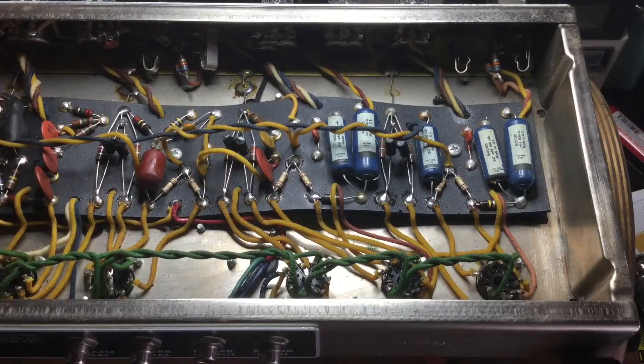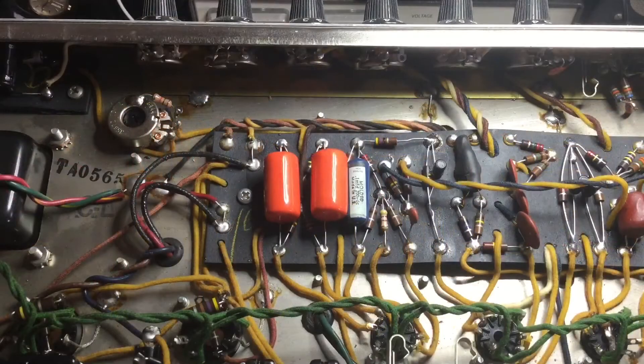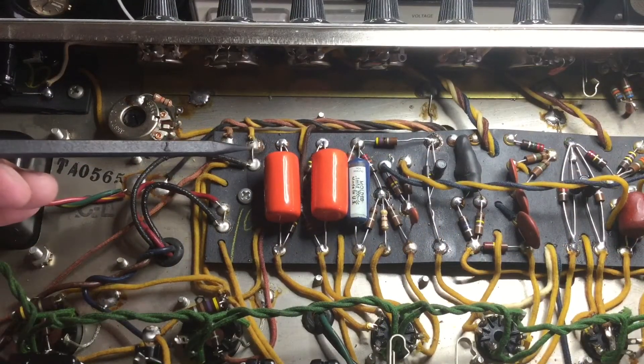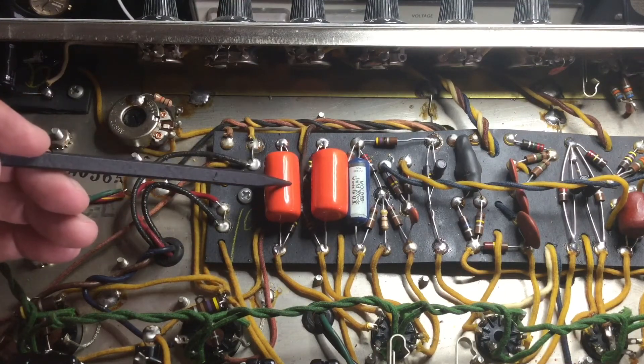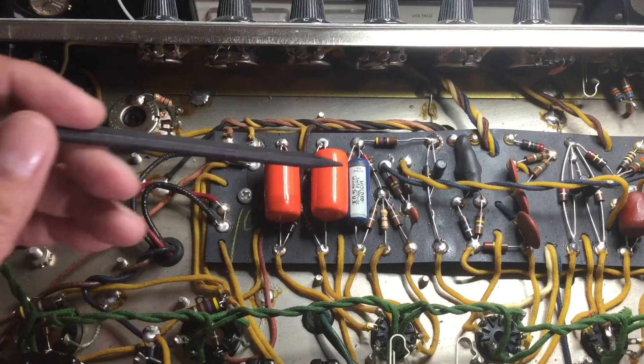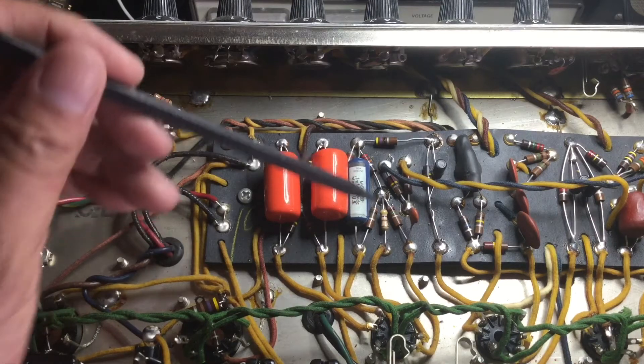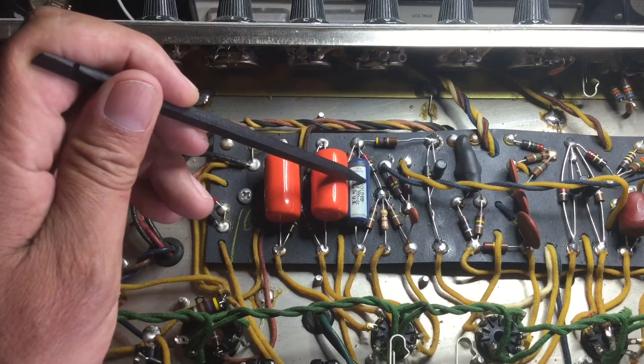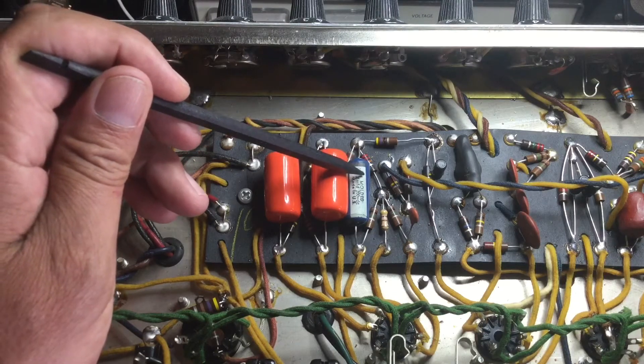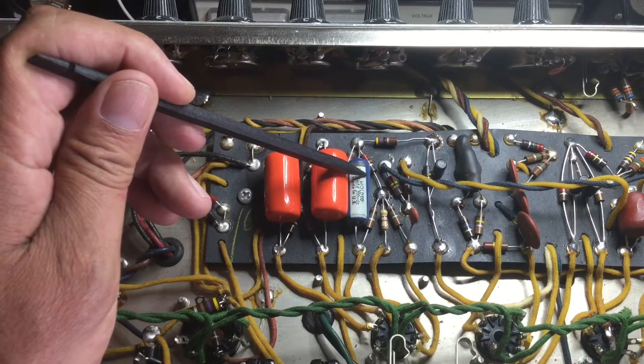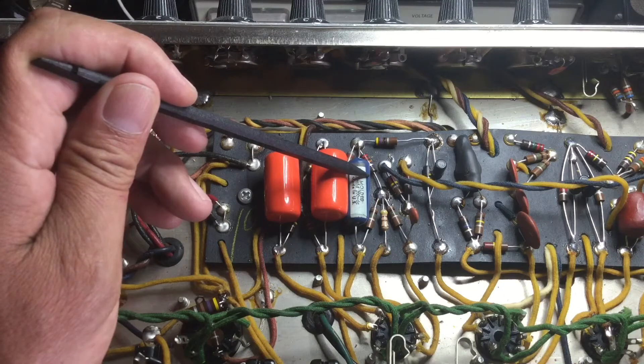Here we're looking at the preamp side of the circuit and power amp side. I'm going to replace these two coupling capacitors here. I dislike the orange drop type capacitor. These just change the sound of the original Fender amplifiers too much. We have the original polyester type capacitors. These are highly valued by collectors. I'm going to check to see if there's DC voltage on one side. If there is, I will replace those capacitors. If not, we will leave those alone.